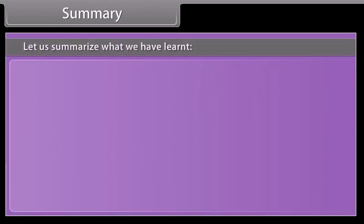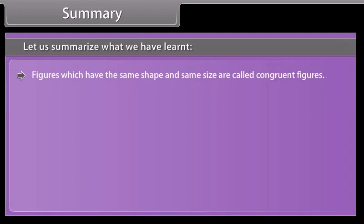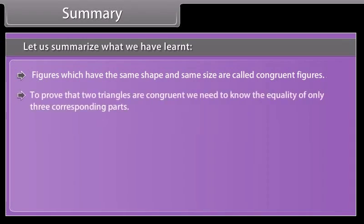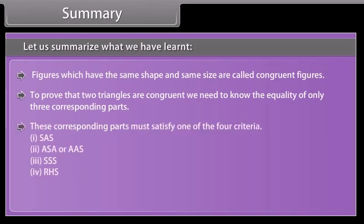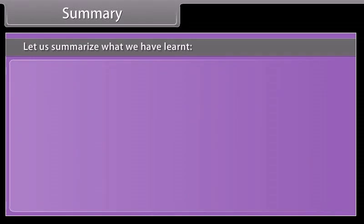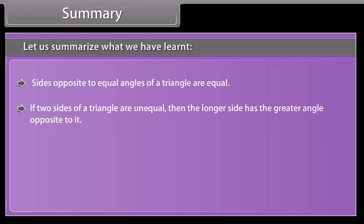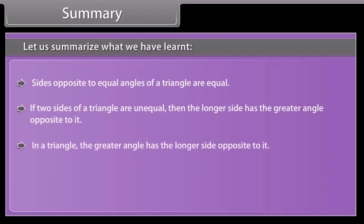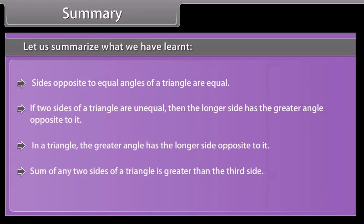Let us summarise what we have learnt. Figures which have the same shape and same size are called congruent figures. To prove that two triangles are congruent, we need to know the equality of only three corresponding parts. These corresponding parts must satisfy one of the four criteria: (1) SAS, (2) ASA, (3) SSS, (4) RHS. Angles opposite to equal sides of a triangle are equal. Sides opposite to equal angles of a triangle are equal. If two sides of a triangle are unequal, then the longer side has the greater angle opposite to it. In a triangle, the greater angle has the longer side opposite to it. The sum of any two sides of a triangle is greater than the third side.